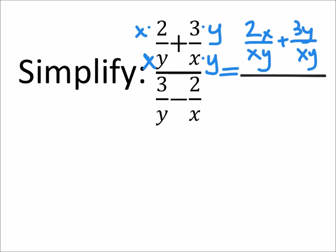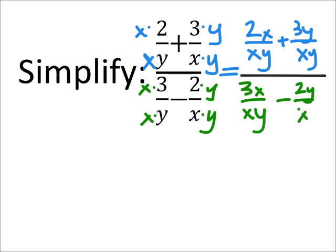That's great, that gives us common denominators. Now in the denominator it's the same thing. I've got a y that's missing an x so I'm going to multiply the 3 by x. The x is missing a y so I'm going to multiply the 2 by y as well. That changes to 3x over xy minus 2y over xy.